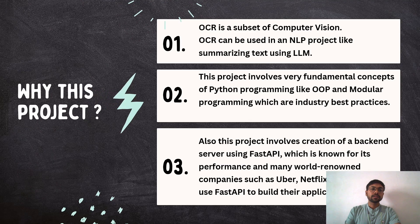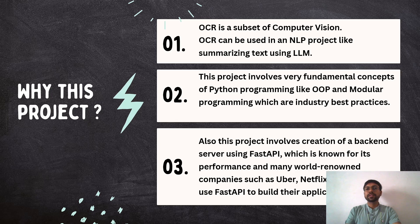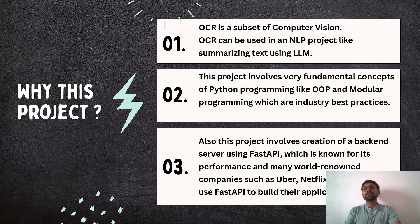You might ask: Abhijit, you are learning data science — why are you doing this project? There are mainly three reasons. First, OCR is a subset of computer vision, and I can use OCR in an NLP project like summarizing text using LLMs. Second, this project involves fundamental Python programming concepts like object-oriented programming and modular programming, which are industry-based practices. Third, this project involves creating a backend server using FastAPI, which is known for its performance, and many world-renowned companies such as Uber, Netflix, and Microsoft use FastAPI to build their applications.